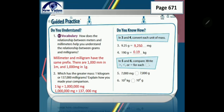In numbers 5 and 6, compare using greater than, less than, or equal. Number 5: 7,000 milligrams and 7,000 grams — that's less than. Number 6: 100 kg and 10,000 grams — that's greater than.